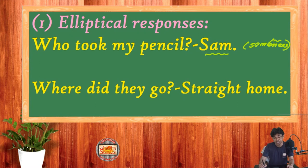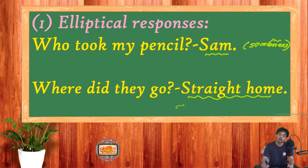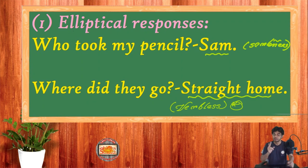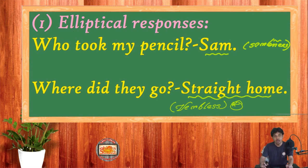The same thing happens with: 'Where did they go?' — answer: 'Straight home.' Here also you don't get a verb, but it's a sentence — also a verbless sentence. These are considered sentences because they have a complete expression. After listening, the person asking the question has completely got their answer and there's no confusion. That's why in elliptical responses we use verbless sentences.